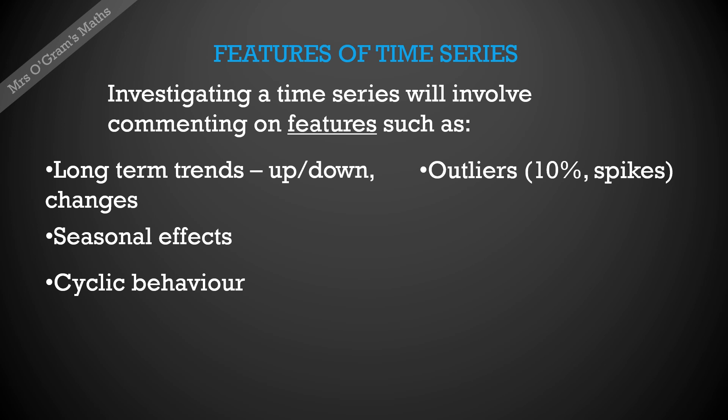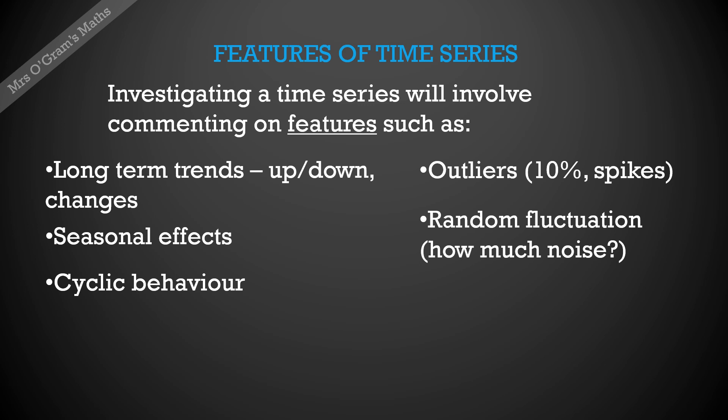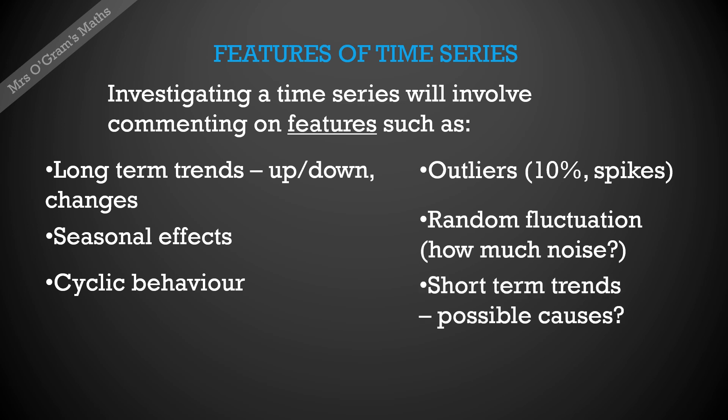We would also consider anything that looks like outliers. Once you look at your graph you look for anything unusual — we tend to refer to that as being 10% outside of the norm — looking for spikes on the graph either unusually high or unusually low. We'd also want to look at what level of random fluctuation there is, sometimes referred to as noise: how closely does the data follow the long-term trend and seasonal effects, or is there a fair bit of variation? Finally, look for any short-term trends and possible causes in one portion of the graph.